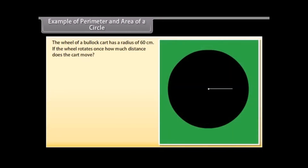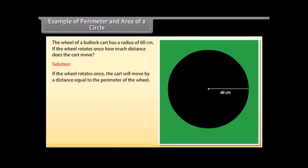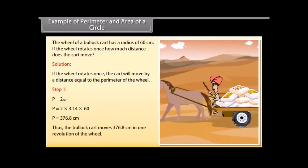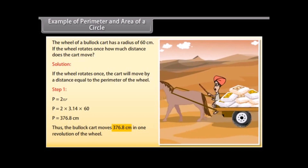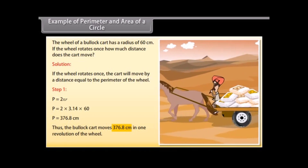Example 3: The wheel of a bullock cart has a radius of 60cm. If the wheel rotates once, how much distance does the cart move? Solution: If the wheel rotates once, the cart moves a distance equal to the perimeter of the wheel. P equals 2πR. Substituting the values, P equals 376.8cm. Thus the bullock cart moves 376.8cm in one revolution of the wheel.